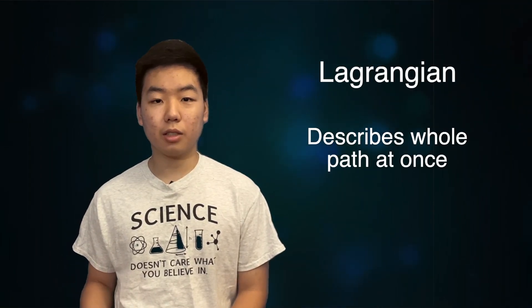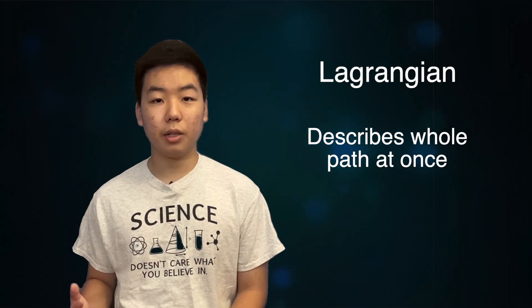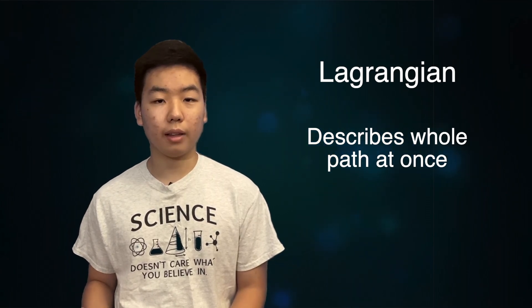That's where Lagrangian mechanics can be useful. Unlike Newtonian mechanics, Lagrangian mechanics aims to describe an object's motion by considering the whole path at once. Lagrangian mechanics was created when mathematician Joseph Louis Lagrange was looking for some kind of pattern of motion that would generalize to all systems.